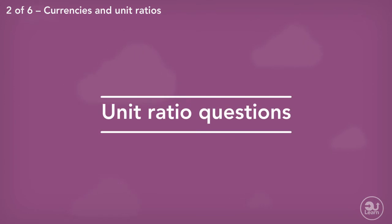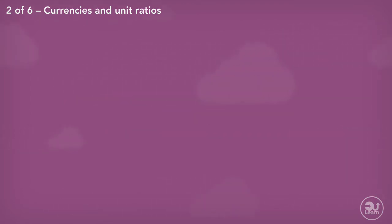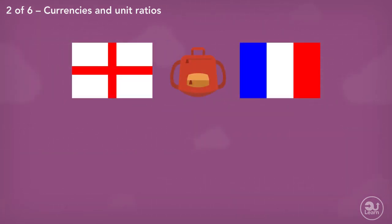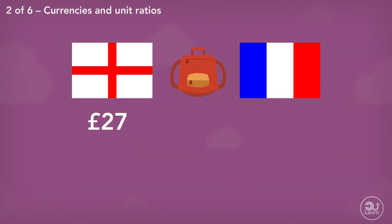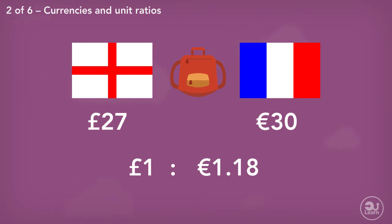These next couple of example questions show ways unit ratios can be used to solve problems. Kofi is travelling from England to France and is thinking of getting a backpack. He's trying to decide if it would be cheaper to get the backpack in England or in France. In England the bag costs £27; in France the same bag costs €30. The exchange rate for pounds to euros is £1 to €1.18. Should Kofi buy the bag before or after he leaves England?